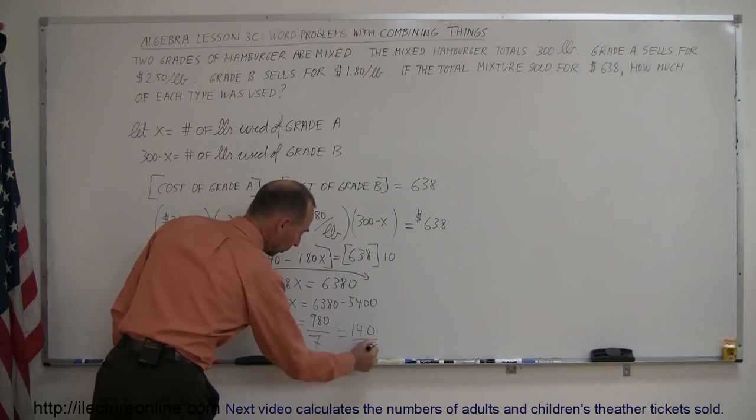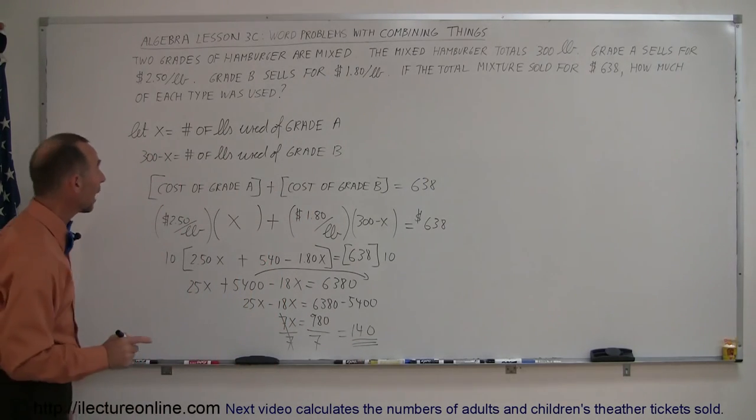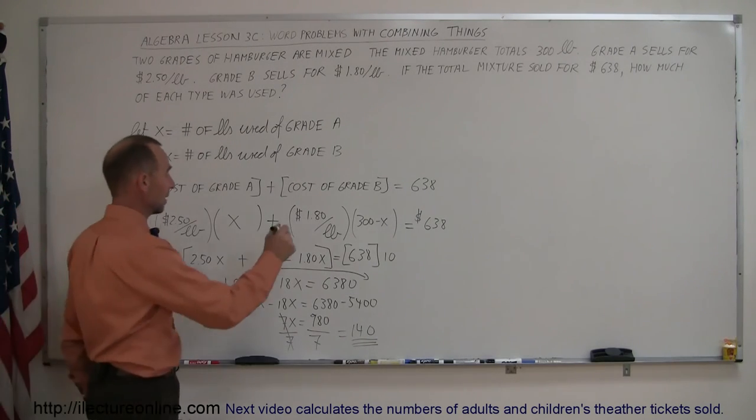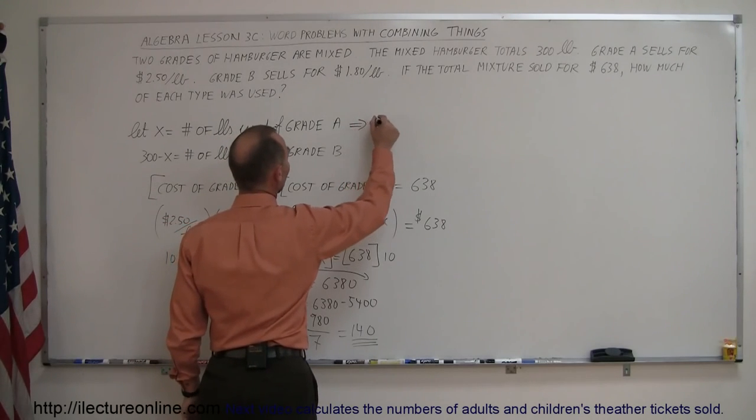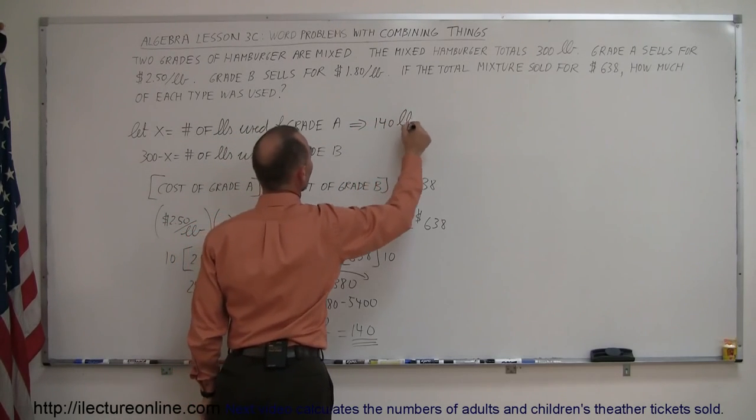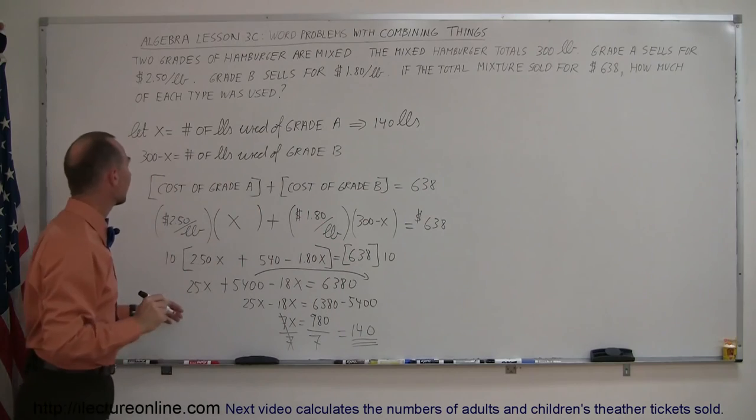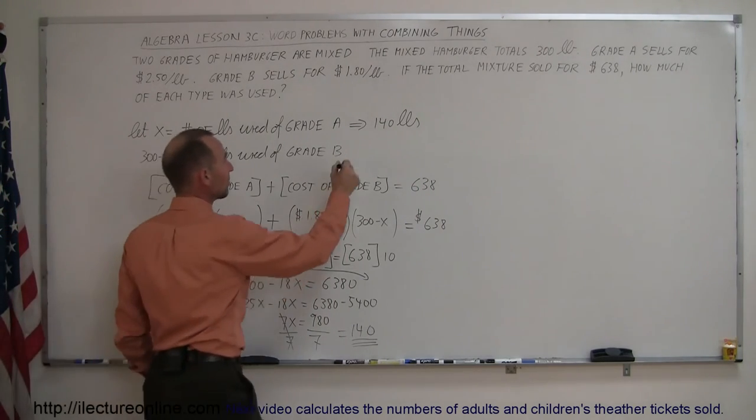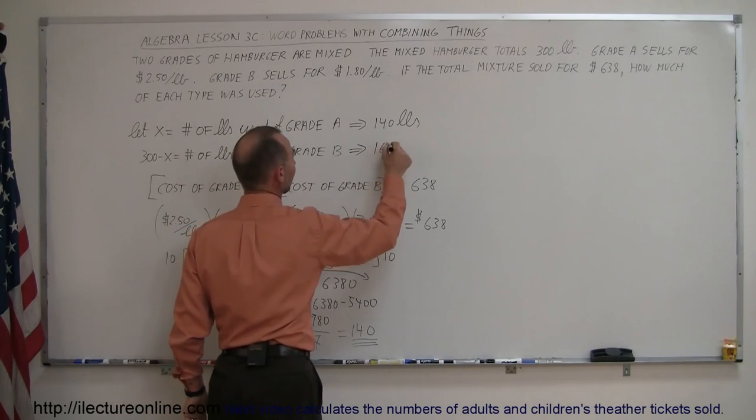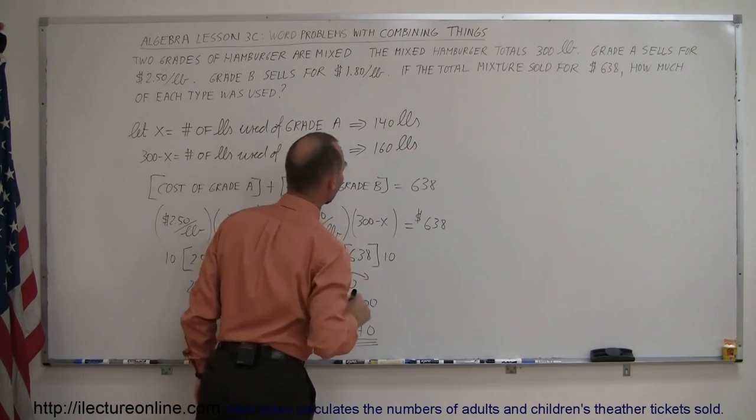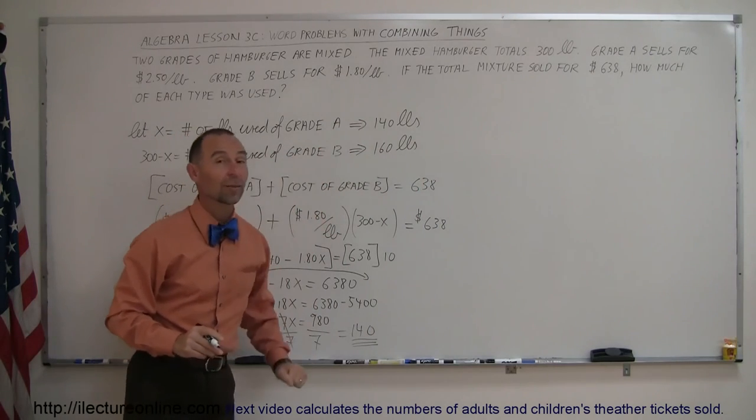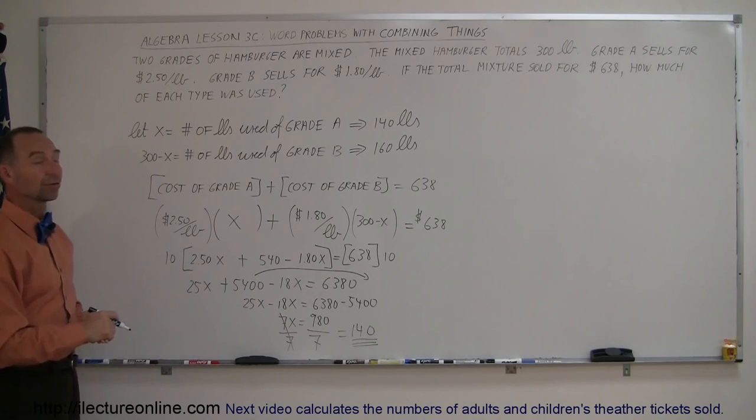X equals 140, and now we can go back and see how we define everything. Since X represented the number of pounds used of grade A, that means we used 140 pounds of grade A. And then here, 300 minus X, since X is 140, 300 minus 140 is 160, that means 160 pounds were used of grade B. If you add the two together, you get 300, which is how much we had to begin with. That's how you do a problem like that.